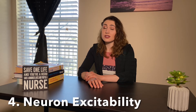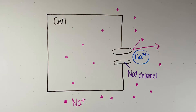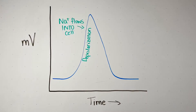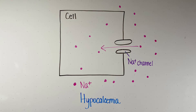Plasma calcium levels also affect the excitability of neurons. Calcium acts like a sodium channel blocker — it sits in front of the sodium channel and won't let sodium into the cell. The flow of sodium into a cell is responsible for depolarization and an action potential. When calcium levels are low, calcium is not blocking sodium from entering the cell, so sodium can flow easily in and cause depolarization. This means neurons become hyperexcitable with hypocalcemia.